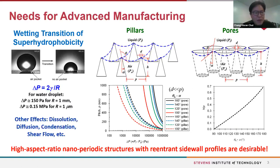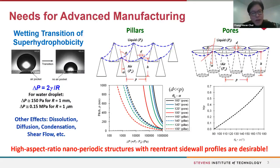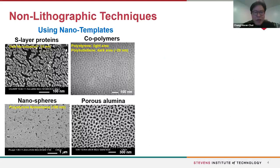There are many other effects: air can dissolve into water or diffuse out, condensation can occur at the surface, and high-speed shear flow can take air away. The key issue is how to keep the air or lubricant liquid such as oil between the structures. Smaller structures are better at retaining the air or oil layer, which is why it's very important to create nanoscale structures, especially over large areas.